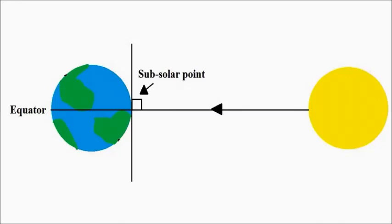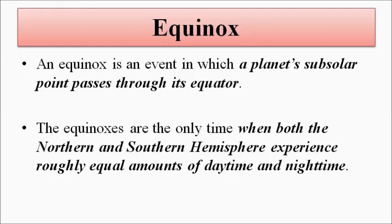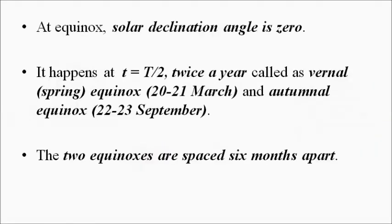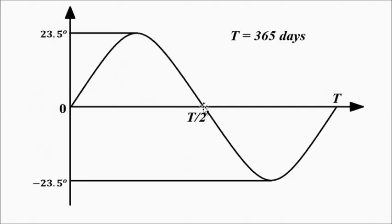Equinox is the event or position of the earth with respect to the sun where the sub-solar point passes through the equator — where the line joining the centre of the sun and the centre of the earth passes exactly through the equator with no inclination. You can also say that equinox is the position where the solar declination angle is zero.